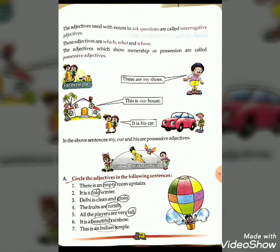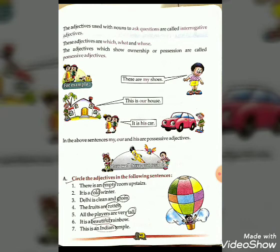Possessive adjective: the adjectives which show ownership or possession are called possessive adjectives. For example: 'These are my shoes,' 'This is our house,' 'It is his car.' The words my, our, and his show ownership and possession — they are possessive adjectives.